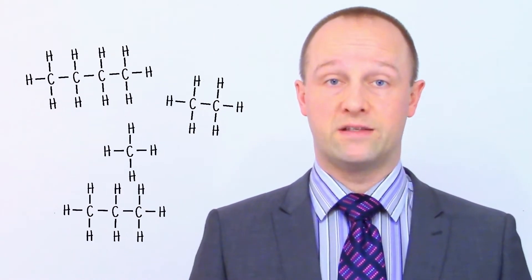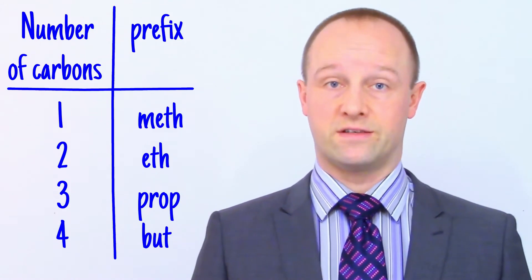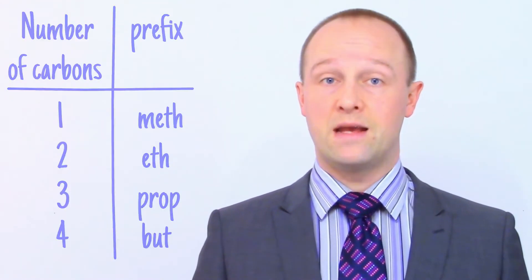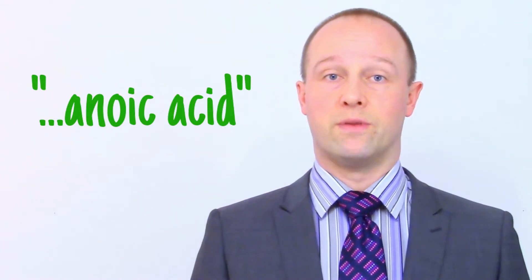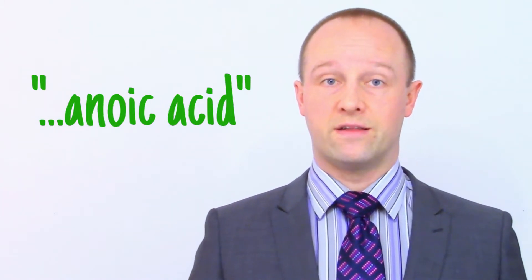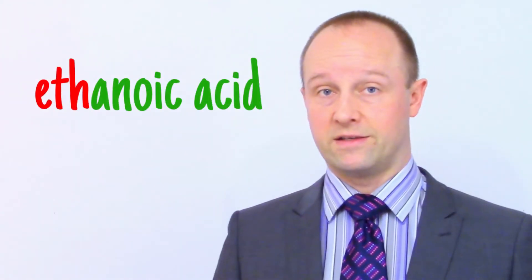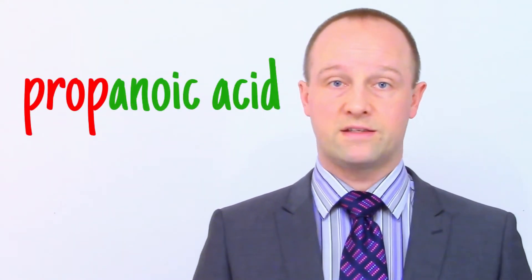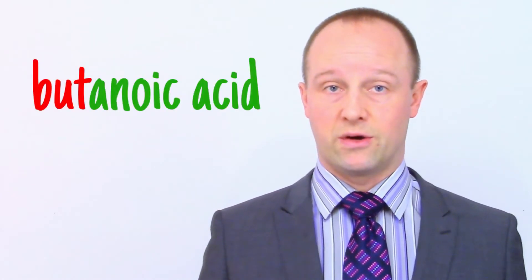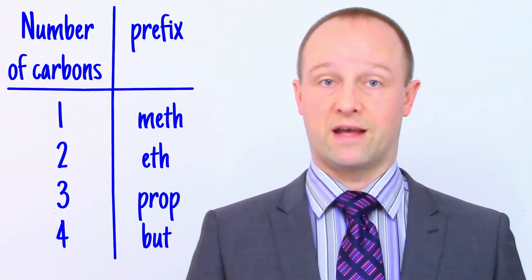Carboxylic acids are all based upon alkanes like this. They use the same sort of prefixes as alkanes and alkenes, but their names all end anoic acid. So, before we even draw the molecular structure, we can say that the carboxylic acid based upon ethane will be ethanoic acid. If it was based upon methane, it would be methanoic acid. Based upon propane would be propanoic acid, and butane would give us butanoic acid. It basically works the same as the way we name alkanes and alkenes.